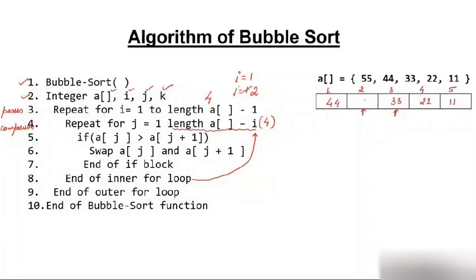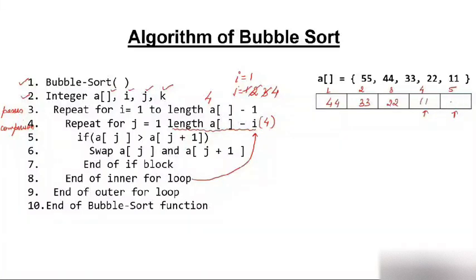j increments to 3: A[3] is 55, A[4] is 22 — 55 is greater, so swap — 22 moves to position 3 and 55 to position 4. j increments to 4: A[4] is 55, A[5] is 11 — 55 is greater, so swap — 11 moves to position 4 and 55 to position 5. j cannot be incremented beyond 4, so the inner loop exits. The outer loop then increments i from 1 to 2. After pass one, 55 is in its sorted position.